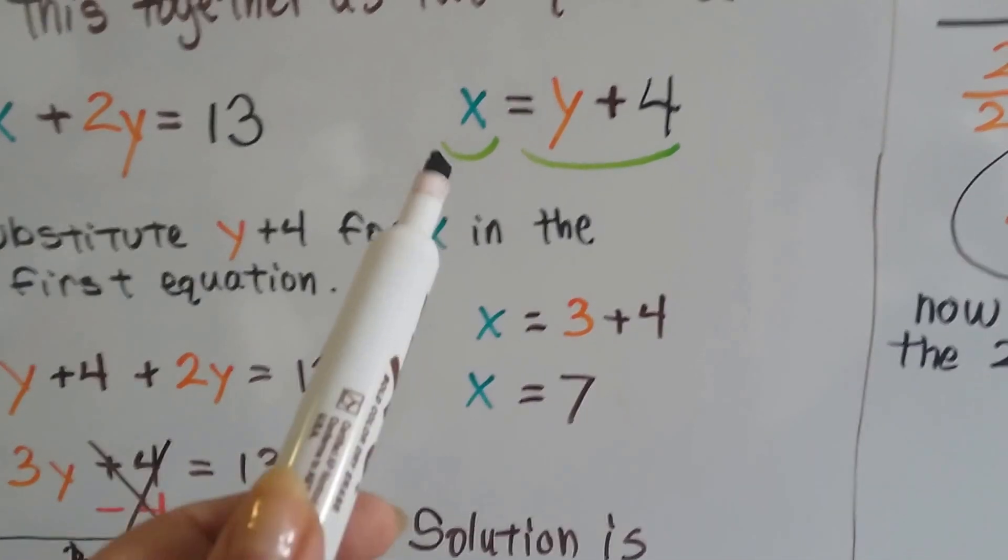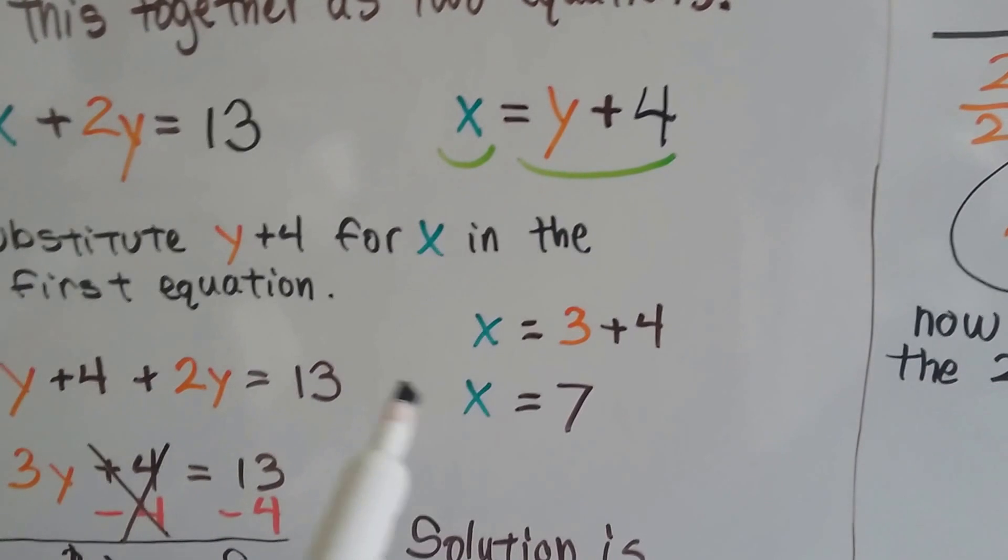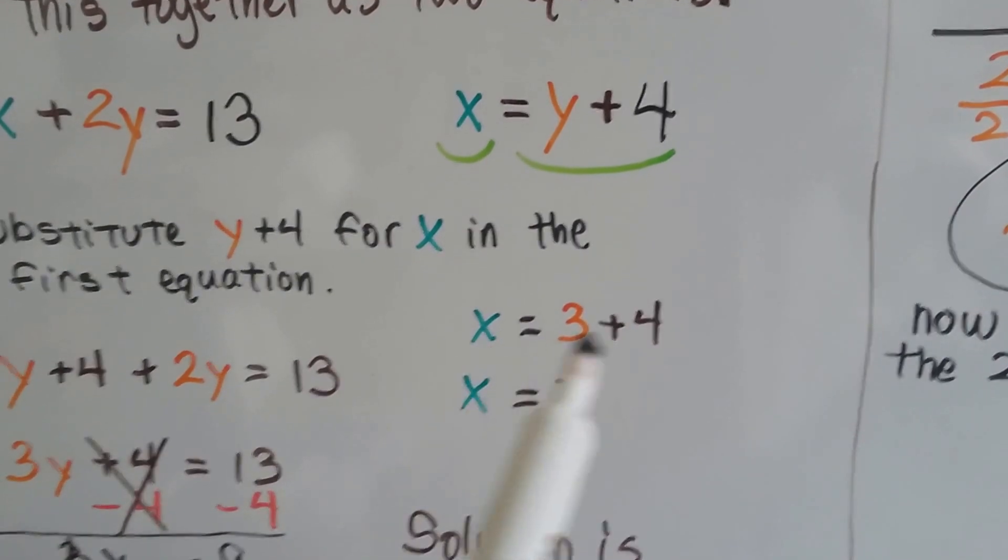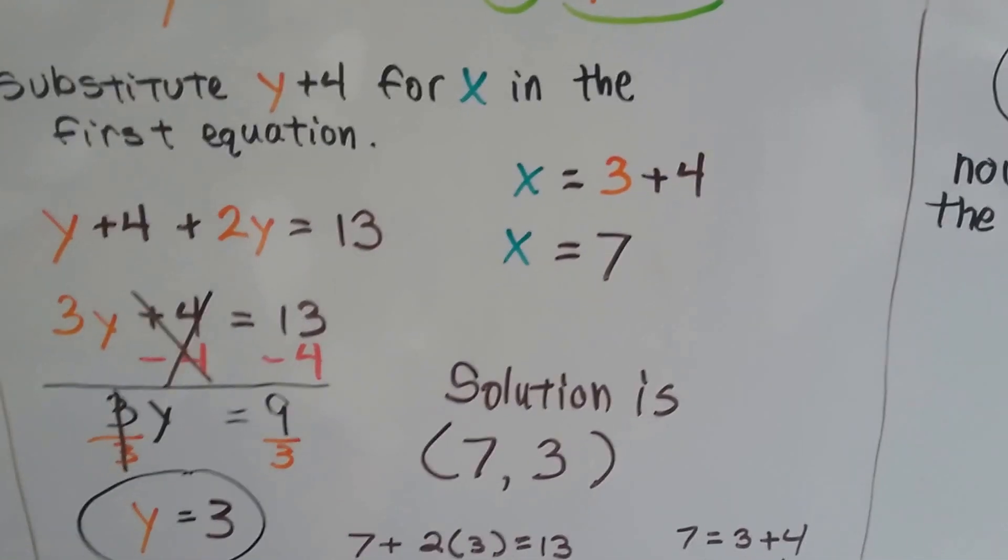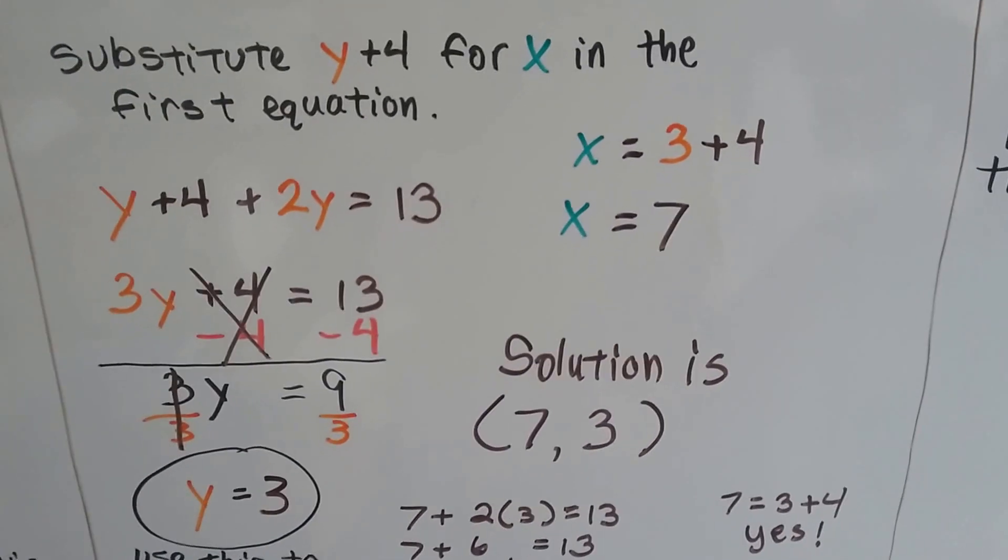So here's our second equation, x equals y plus 4. So now we know x equals 3 plus 4. Well, x is 7. So our solution is x is 7, y is 3.